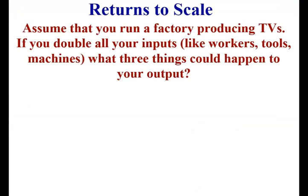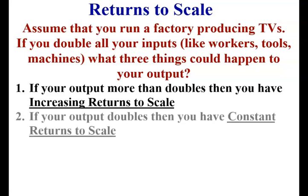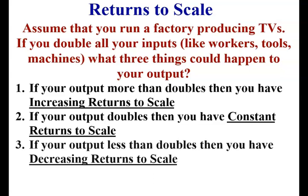Assume that you run a factory and produce TVs. If you double all your inputs, three things can happen. If your output more than doubles, you have increasing returns to scale. If your output doubles, you have constant returns to scale. And if your output less than doubles, you have decreasing returns to scale.